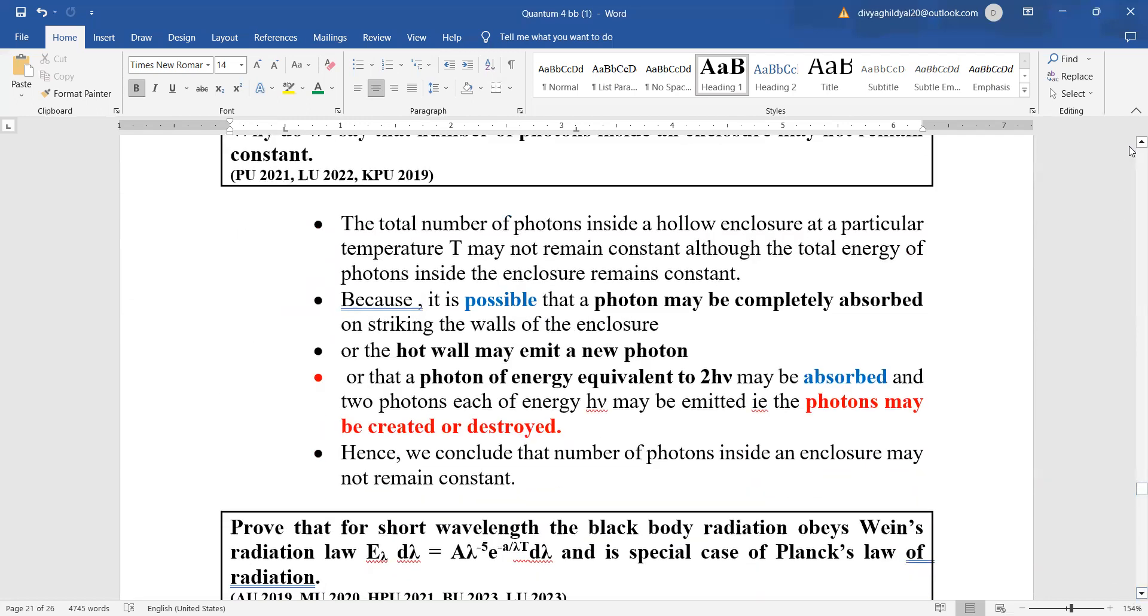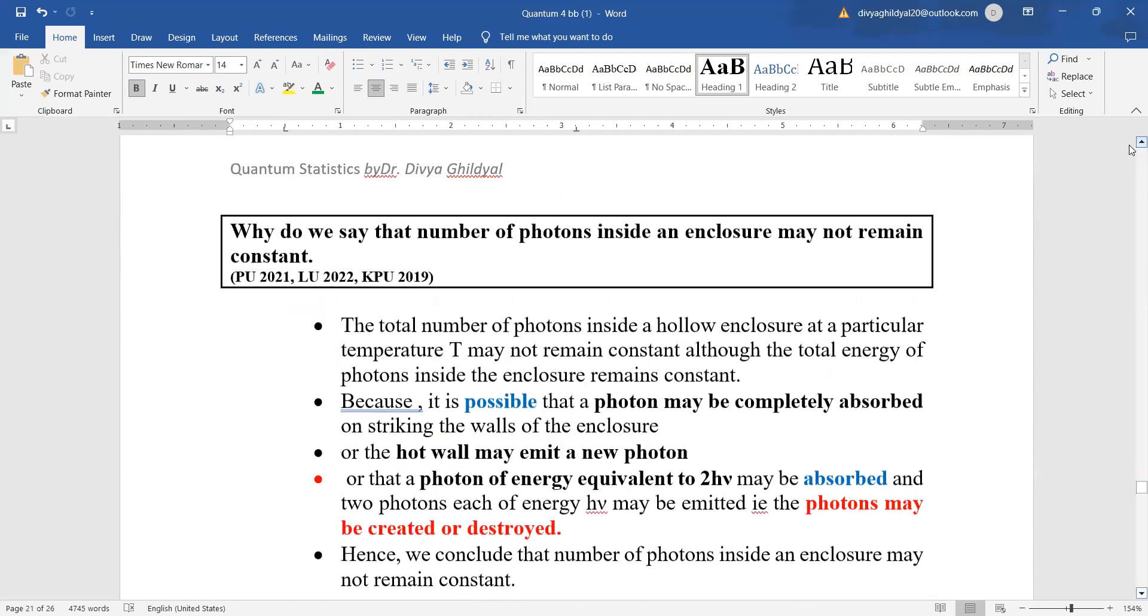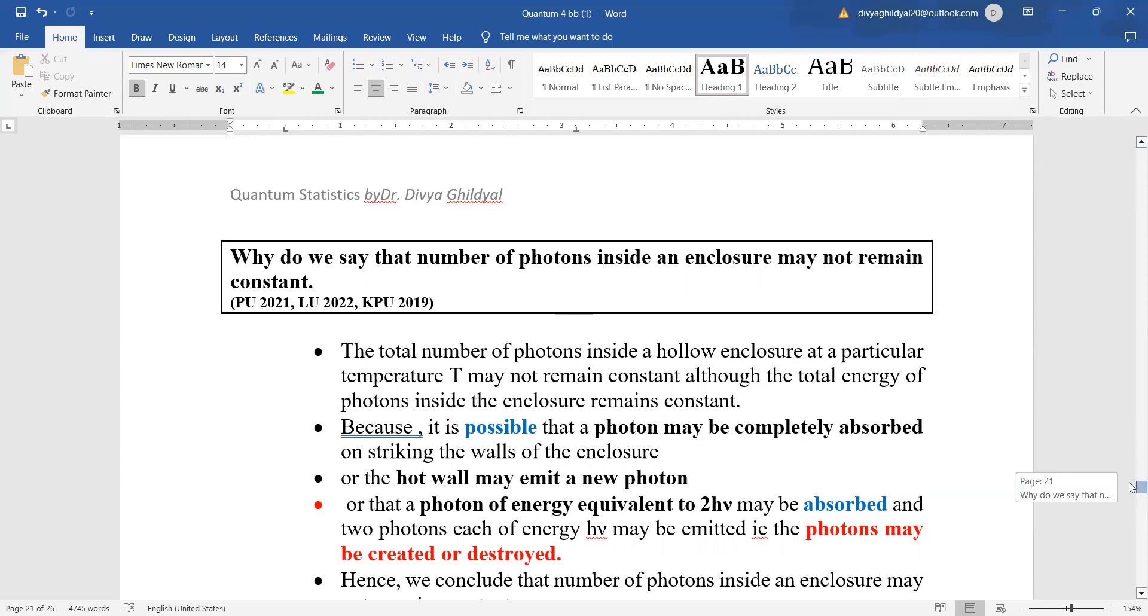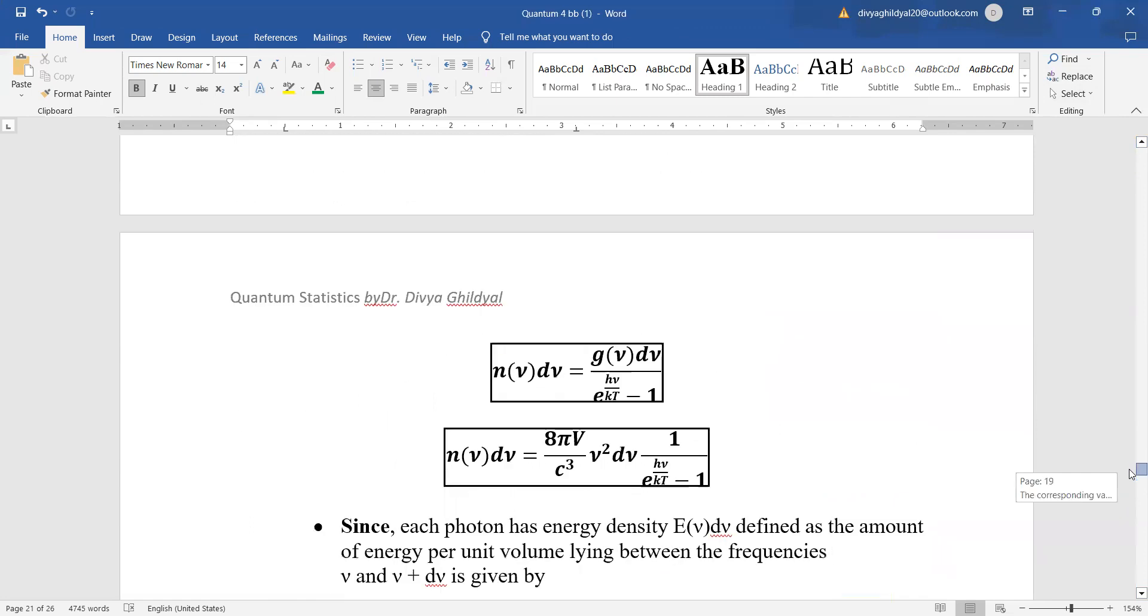The number of photons in an enclosure may not remain constant because photons may be completely absorbed on striking the wall or the hot wall may emit new photons, or a photon of energy 2 h mu may be absorbed and two photons each of energy h mu may be emitted. That is, photons may be created or destroyed, hence they will not remain constant in the enclosure, but energy will remain constant.